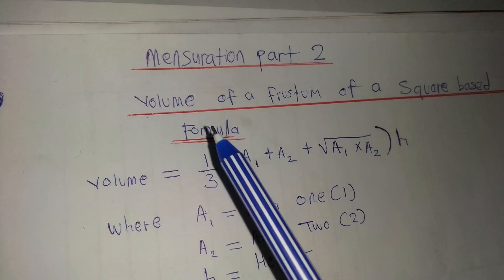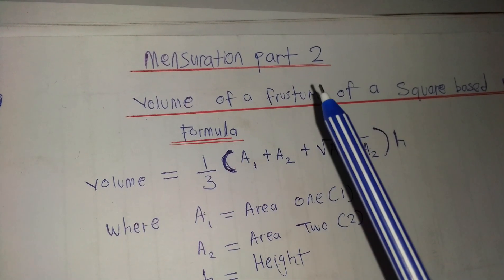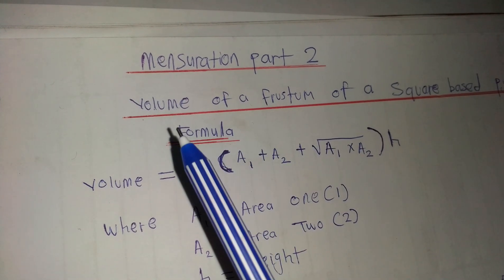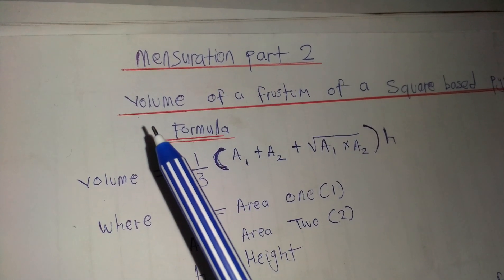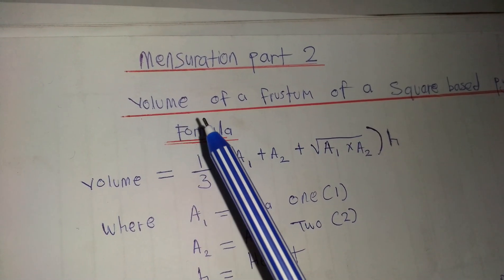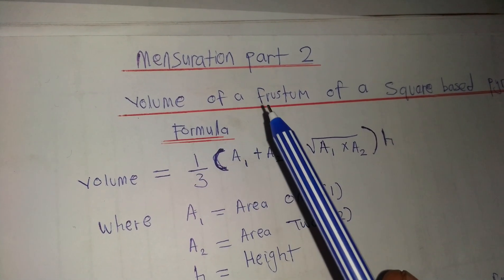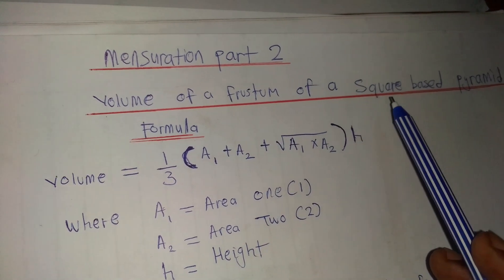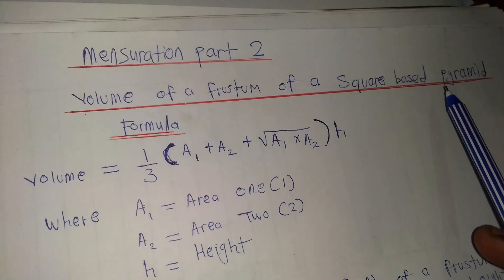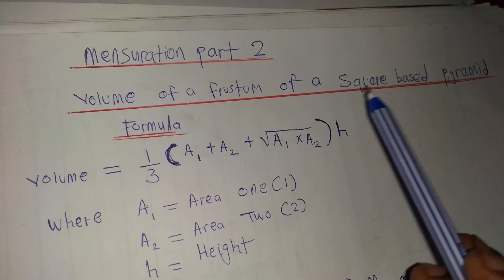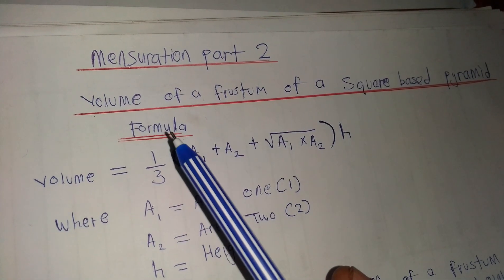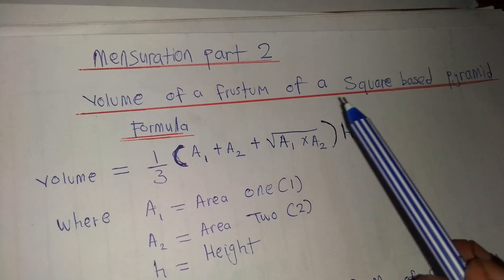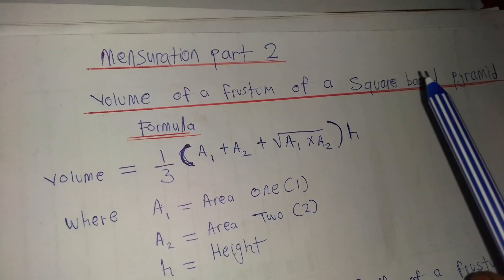In Misolation Part 2, our focus will be on the volume of the frustum of the square-based pyramid — the volume of the frustum of the square-based pyramid.